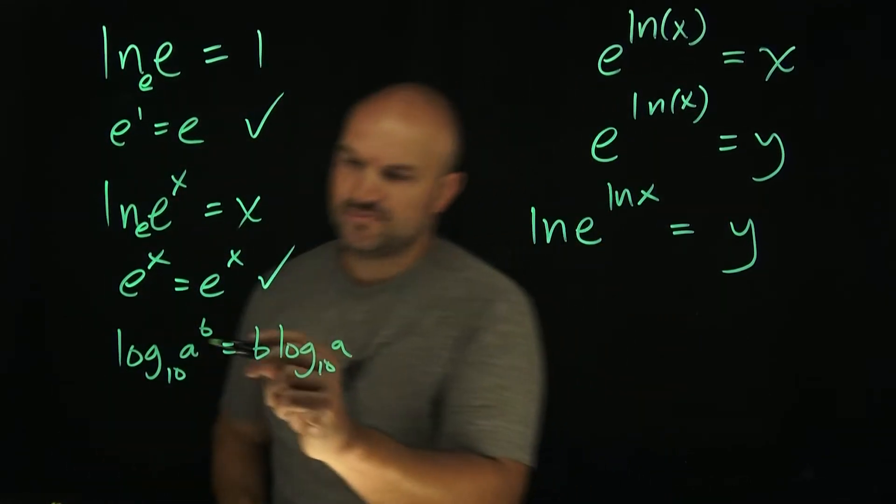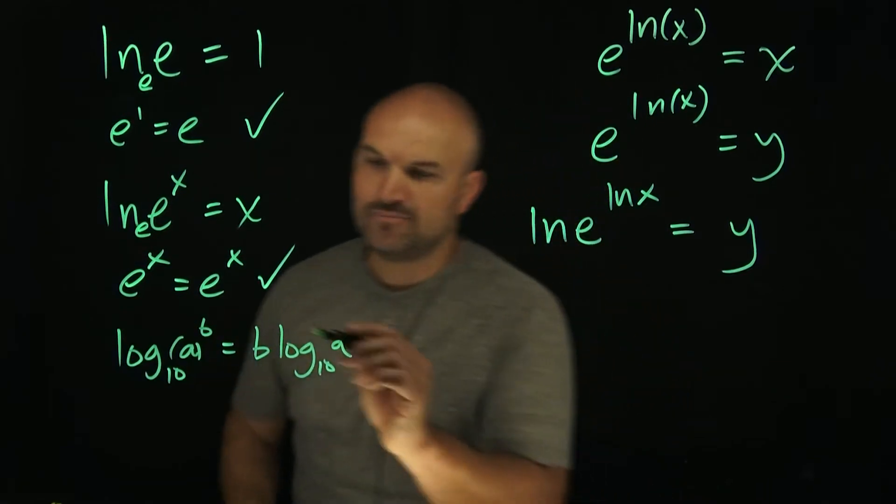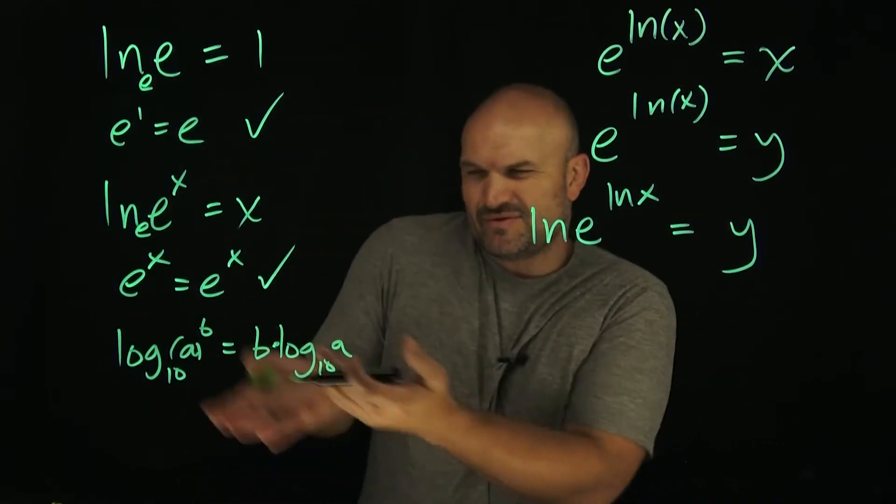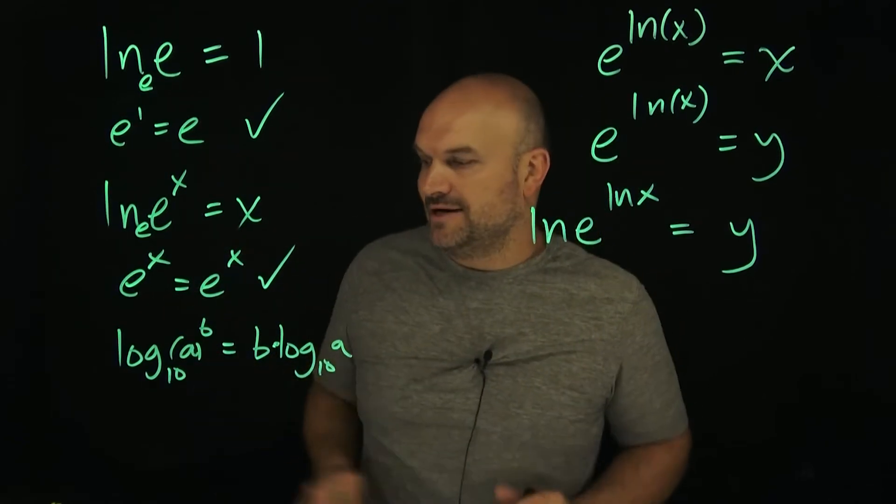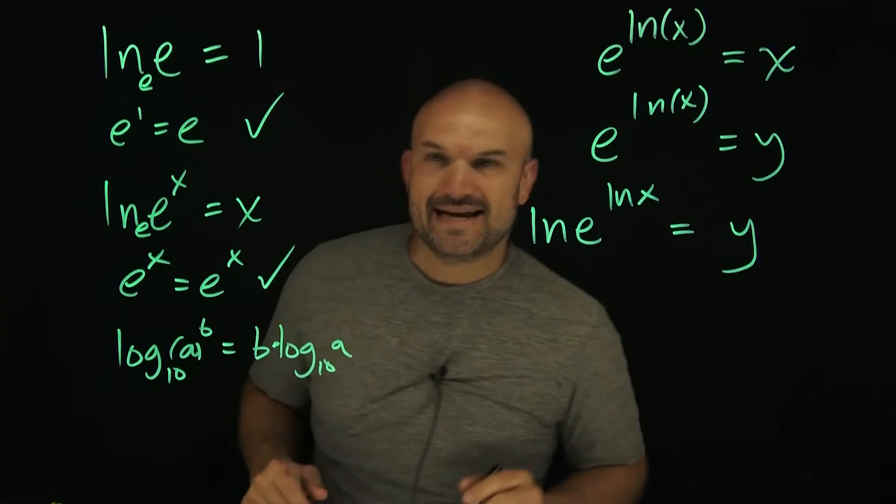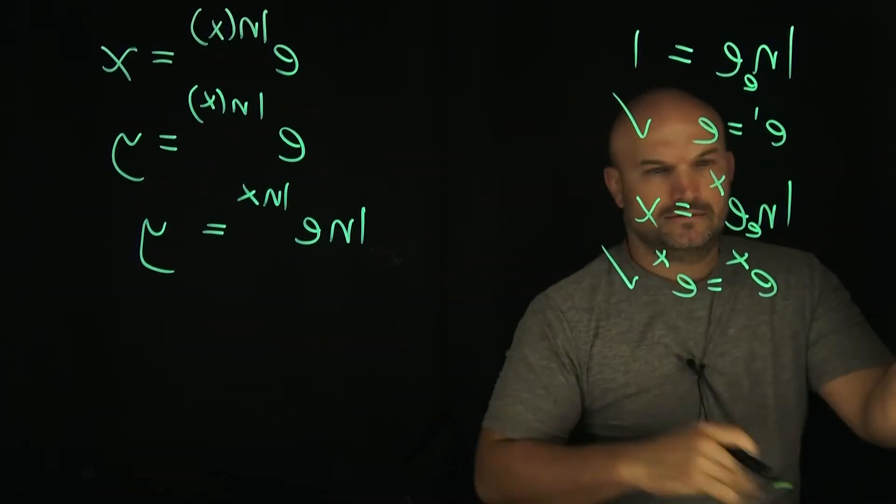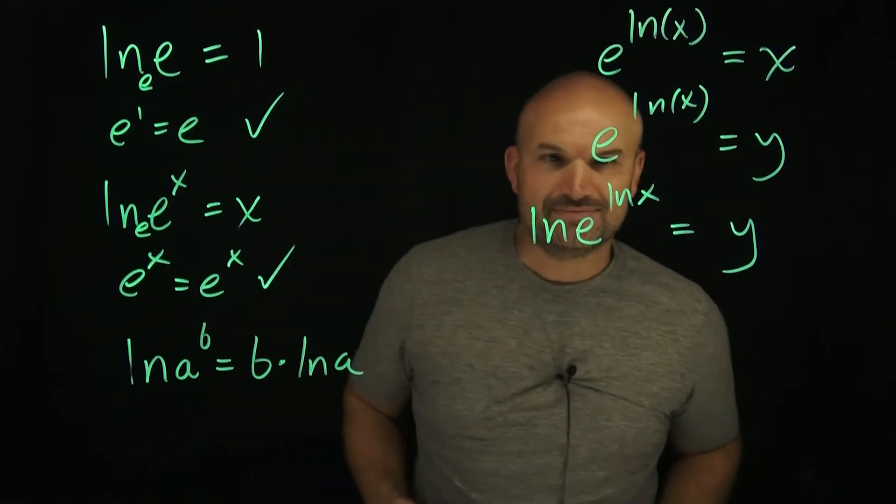The product rule basically says whenever you have an argument raised to a power, you can rewrite that in front as a product of that logarithm. It could be any base or natural logarithm. To keep things consistent, let's use this as a natural logarithm. I don't want to overly confuse people.